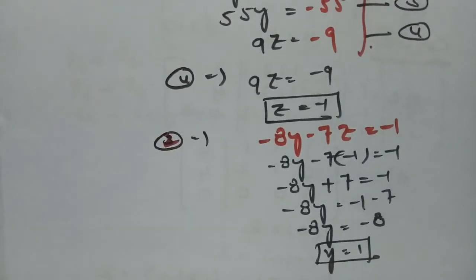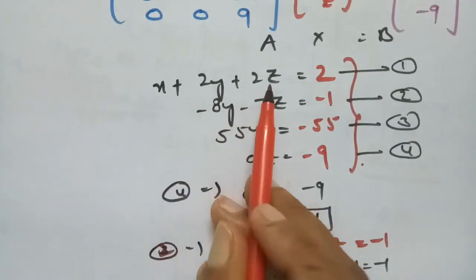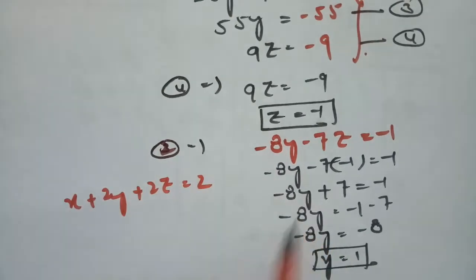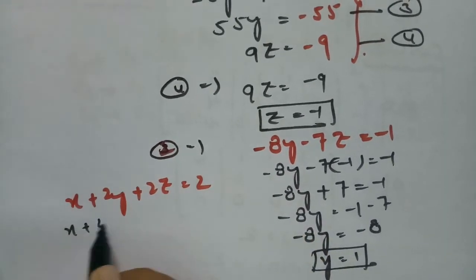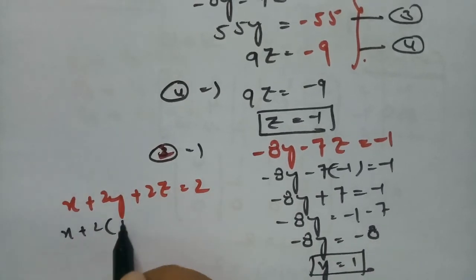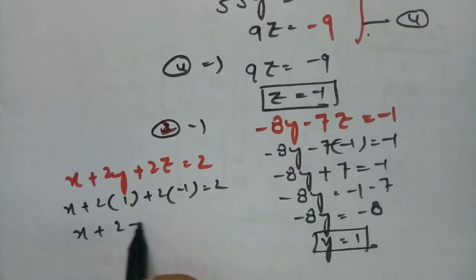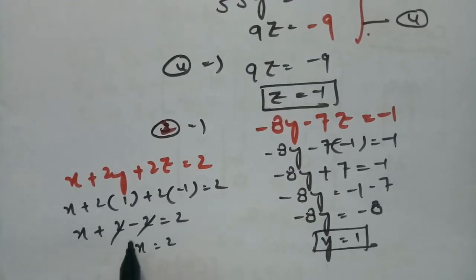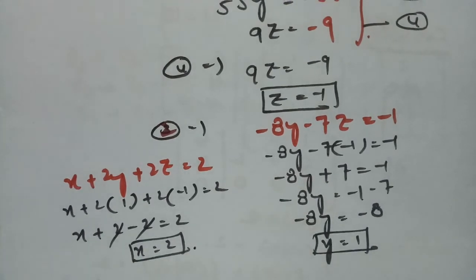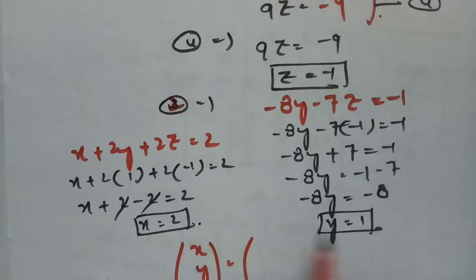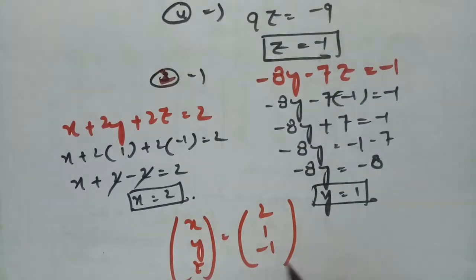After getting the y value, I substitute into equation 1: x plus 2y plus 2z equals 2. Substituting y equals 1 and z equals minus 1: x plus 2 times 1 plus 2 times minus 1 equals 2, so x plus 2 minus 2 equals 2, giving x equals 2.